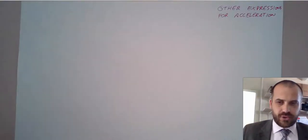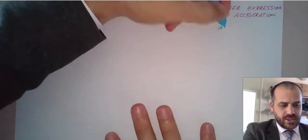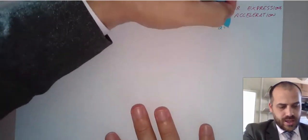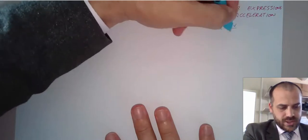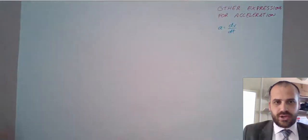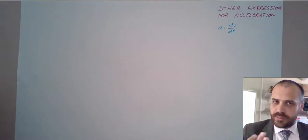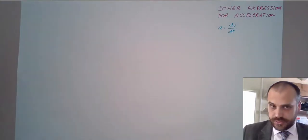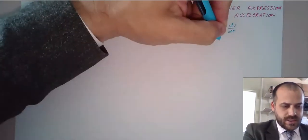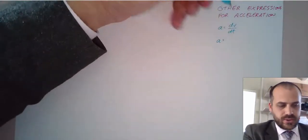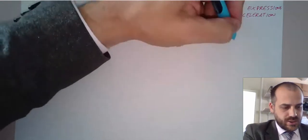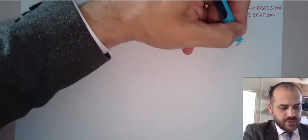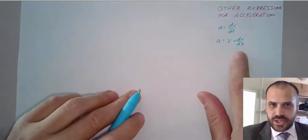This video is about other expressions for acceleration. You already know that acceleration is equal to the derivative of velocity with respect to time. That's one good one, but there are some other ones that you're going to find really useful. One of them is that acceleration is equal to the velocity times the derivative of velocity with respect to position.